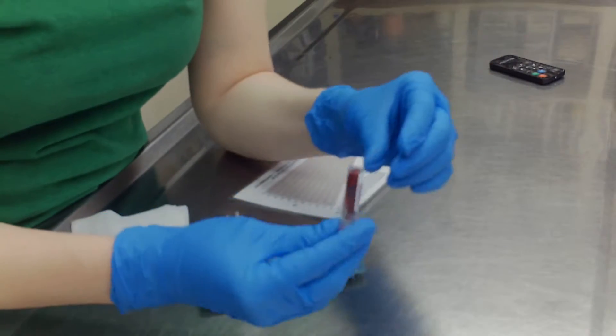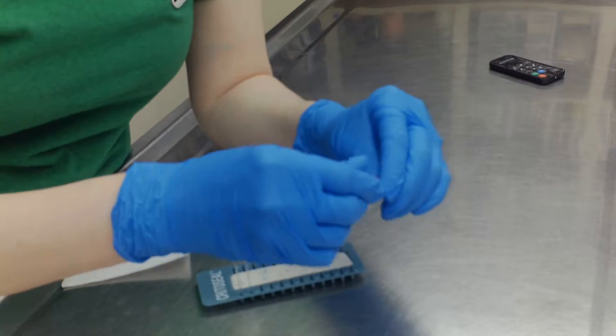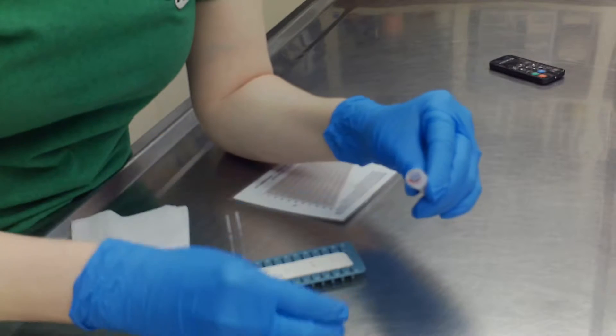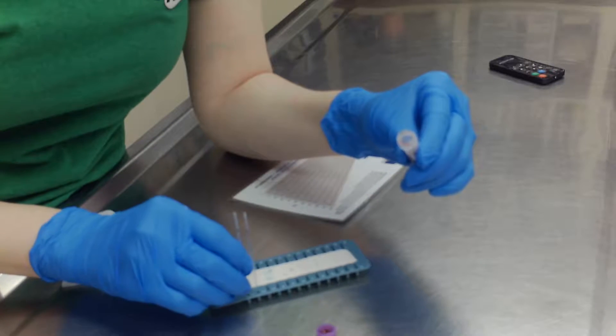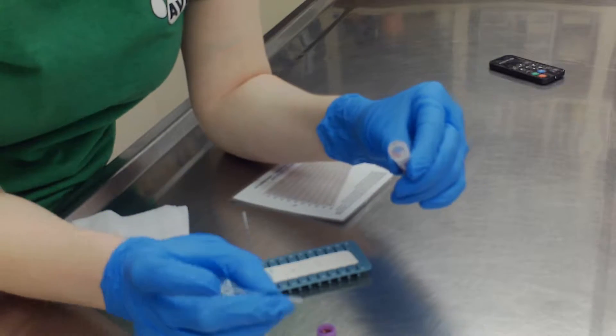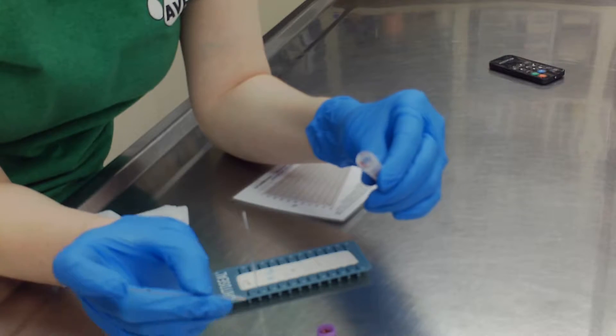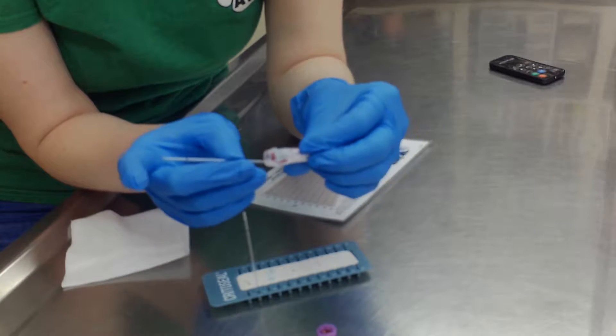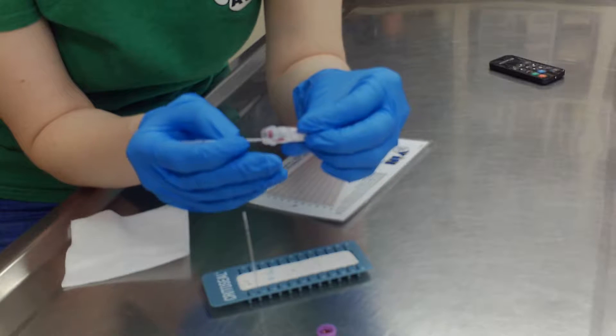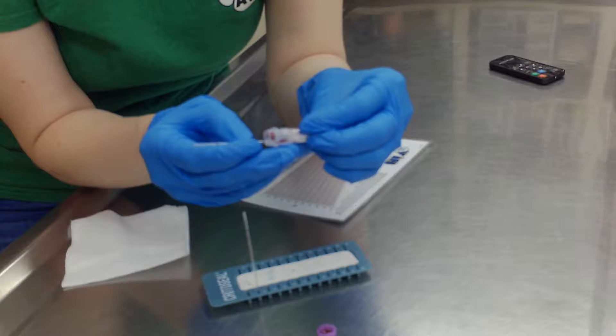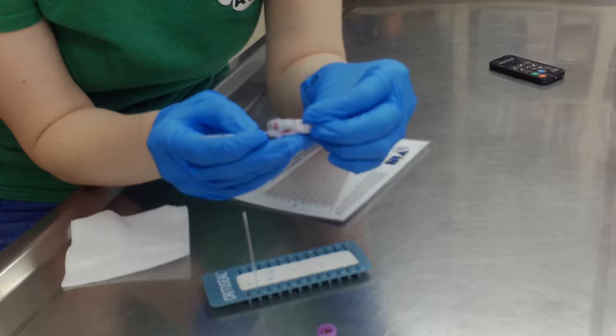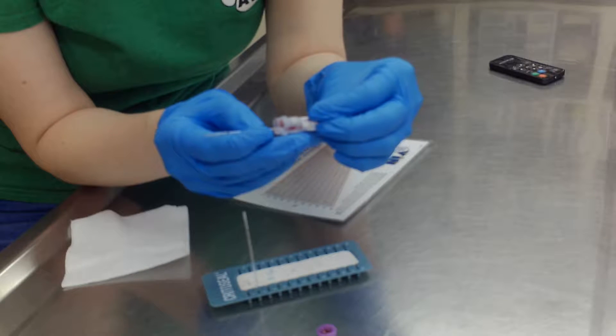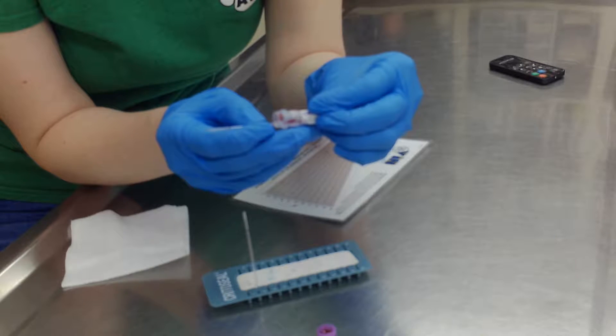The first thing I'm going to do is invert it a couple of times. I'm going to put my finger on the end of the micro-hematocrit tube and just fill it about 70 to 90 percent. It's just going to fill on its own. I'll touch it to the blood and kind of invert it a little bit.